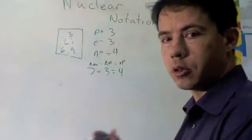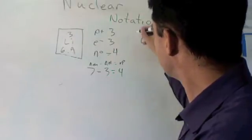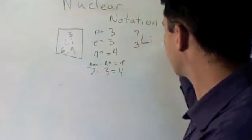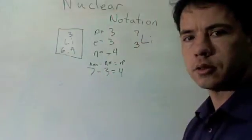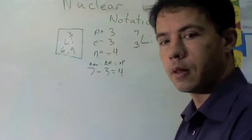So the nuclear notation would be atomic symbol, atomic mass, which is 7, and then protons down here. And is there any electric charge? No. So we're not going to write anything.